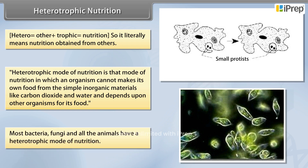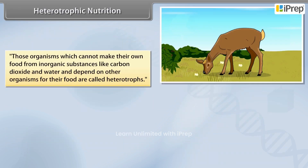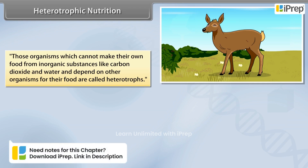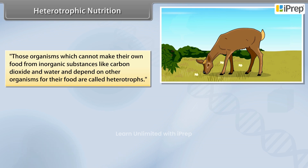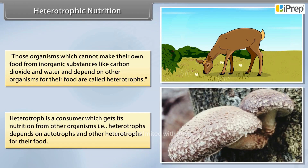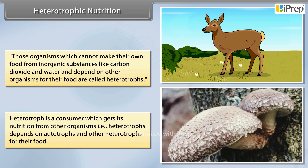Most bacteria, fungi, and all the animals have a heterotrophic mode of nutrition. Those organisms which cannot make their own food from inorganic substances like carbon dioxide and water and depend on other organisms for their food are called heterotrophs. A heterotroph is a consumer which gets its nutrition from other organisms — that is, heterotrophs depend on autotrophs and other heterotrophs for their food.